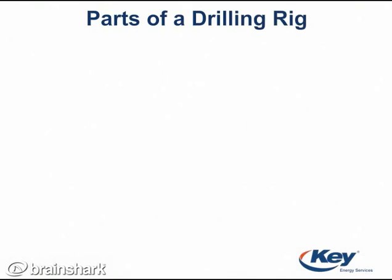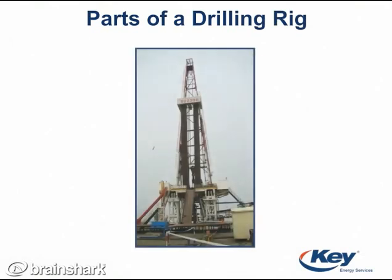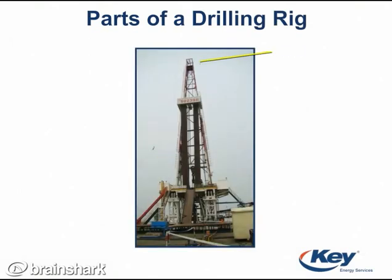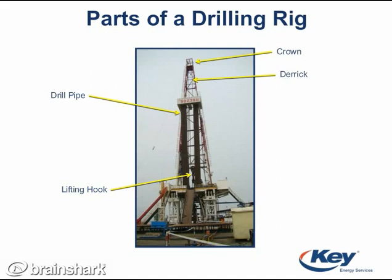This diagram shows some of the major parts of a drilling rig, including the crown at the very top, the derrick, the drill pipe which is run into the well, the lifting hook that lifts drill pipe and other items out of the well, the block, and the substructure for support.